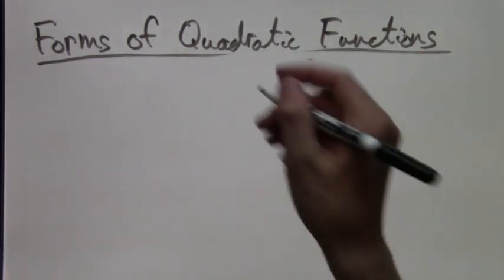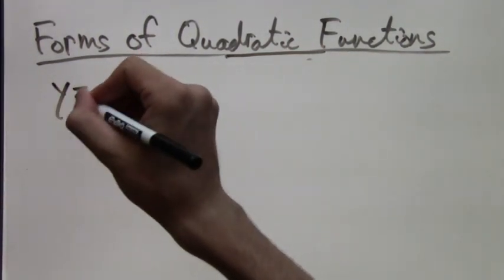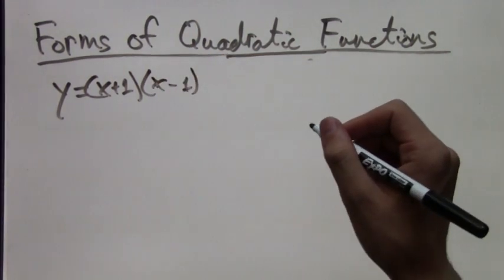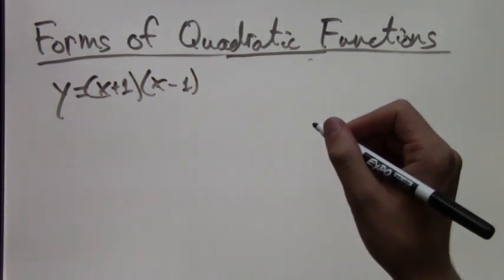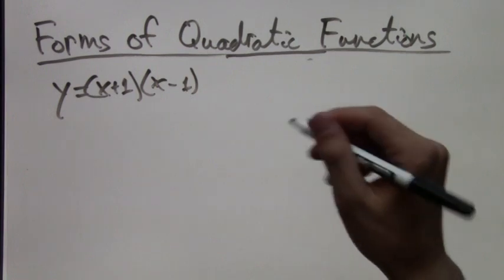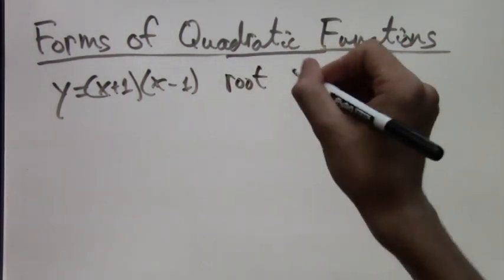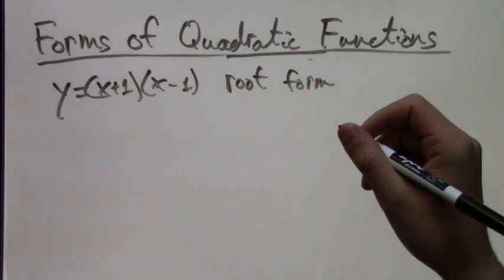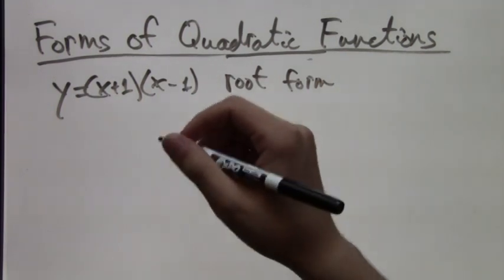Let's do another example. y equals x plus 1 times x minus 1. Again we have x minus something times x minus something else. Really we have x plus 1 but that's the same as x minus negative 1. And usually it's thought of as x minus something.